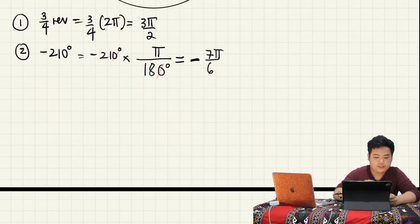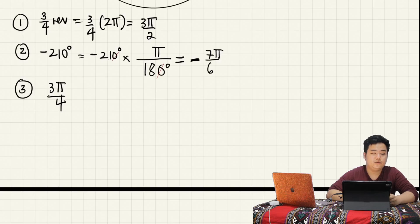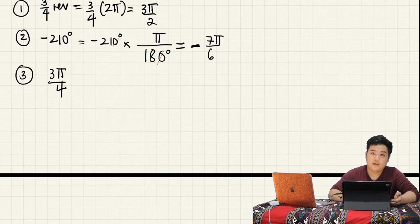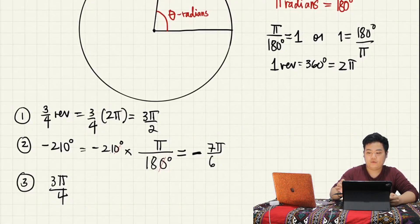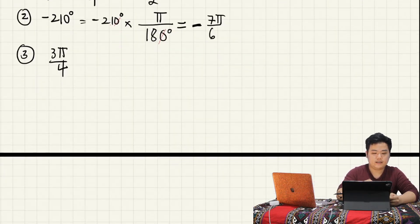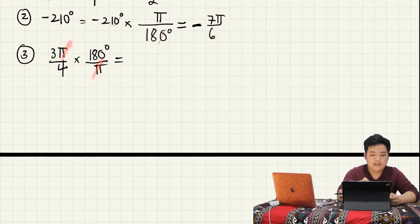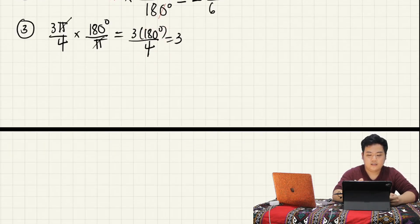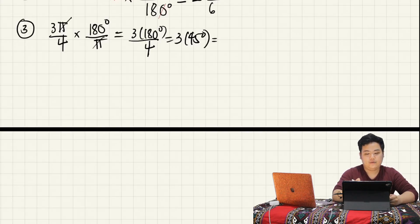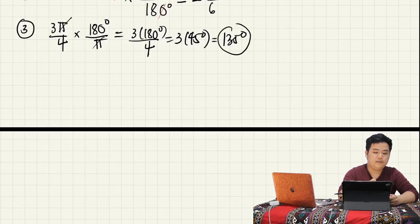One last example for yung conversion. Let's say meron tayong 3 pi over 4. We will convert it to degrees. Automatic yan ay naka-radians kasi walang unit, at walang bilog, at walang degree sign. We multiply it by 180 over pi naman para magkaroon siya ng degrees. Cancel na yung pi. You get 3 times 180 degrees over 4, and 180 degrees over 4 is 45 degrees. Ang makukuha natin dito ay 135 degrees. So 3 pi over 4 is 135 degrees.